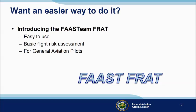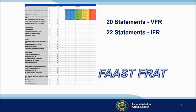Do you want an easier way to do it? Introducing the FAST FRAT, an easy-to-use basic flight risk assessment tool for general aviation pilots. The FAST FRAT is a simple automated spreadsheet that contains 20 condition statements for VFR pilots, 22 for IFR pilots. The statements describe common general aviation flight liabilities and assets. Pilots simply click the yes box next to each statement that applies to their flight. Each yes statement generates a risk value, and those values are totaled on the sheet. The total risk value is related to the risk matrix chart to determine whether the flight risk is likely to be low, moderate, or high.